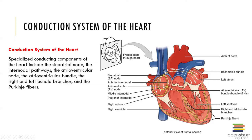The AV bundle leads to the right and left bundle branches, which extend toward the apex of the heart and then turn and fan out deep to the endocardial surface. The left bundle branch, which serves the massive left ventricle, is larger than the right bundle branch. Then we have what are called Purkinje fibers, which are the final link in this distribution network of the conduction system, and they're responsible for depolarization of the ventricular myocardial cells that trigger the actual ventricular contraction.